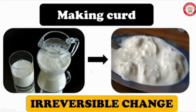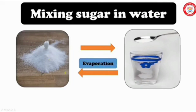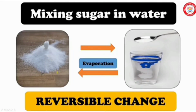Next one: dissolving sugar in water. Here we will get back sugar by the evaporation process. So is it reversible or irreversible? By evaporation, we will get the sugar back. So this is an example for reversible change.